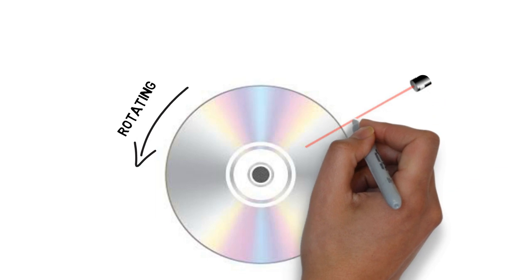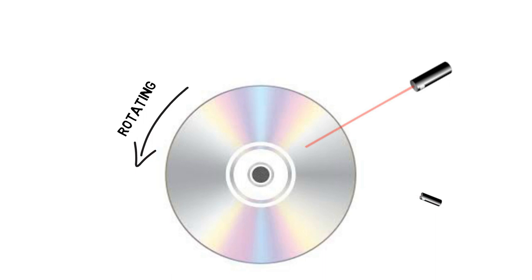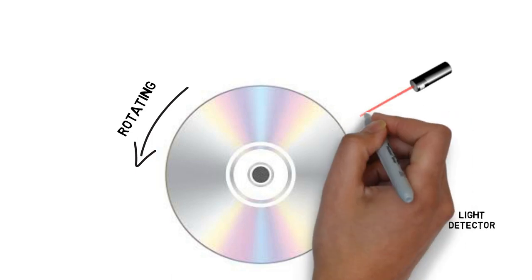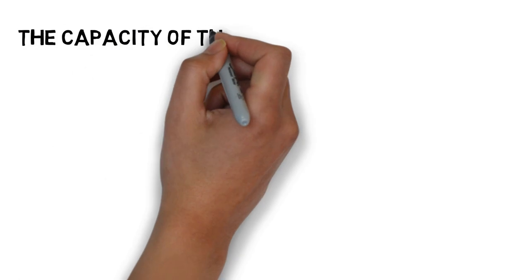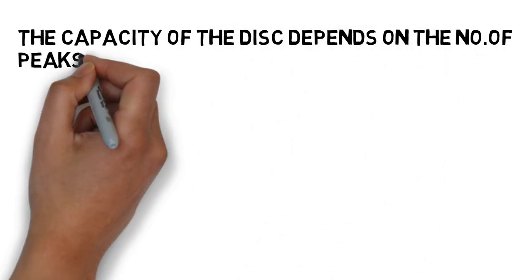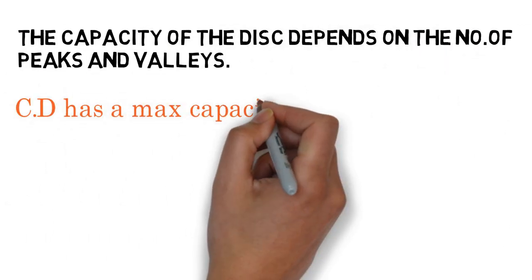In this way, a laser is pointed on the rotating disc, and a chain of binary numbers comes as output. This may be music, video, document, or another type of file. The disc capacity depends on the number of valleys and peaks, which varies from each type of disc.